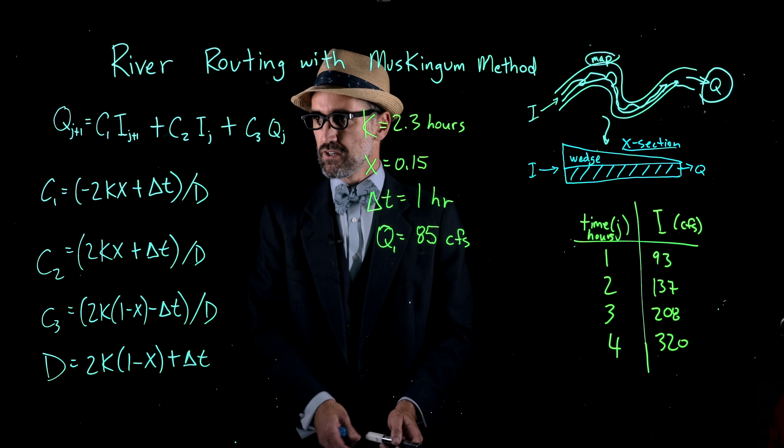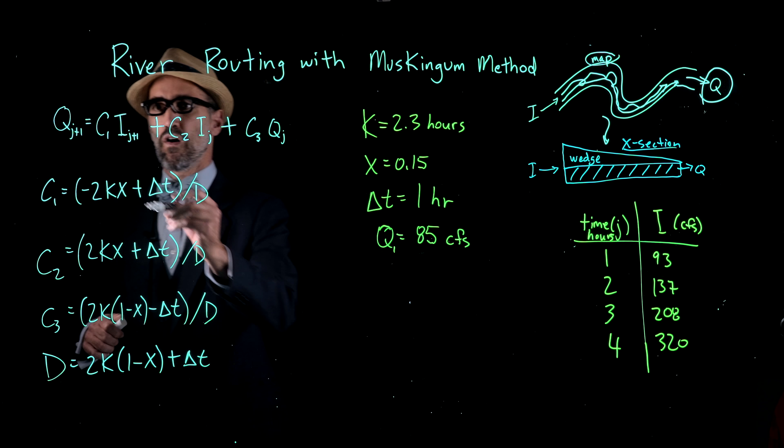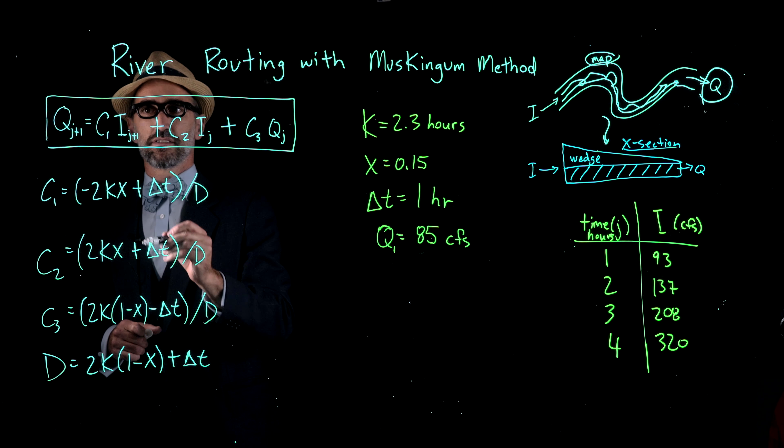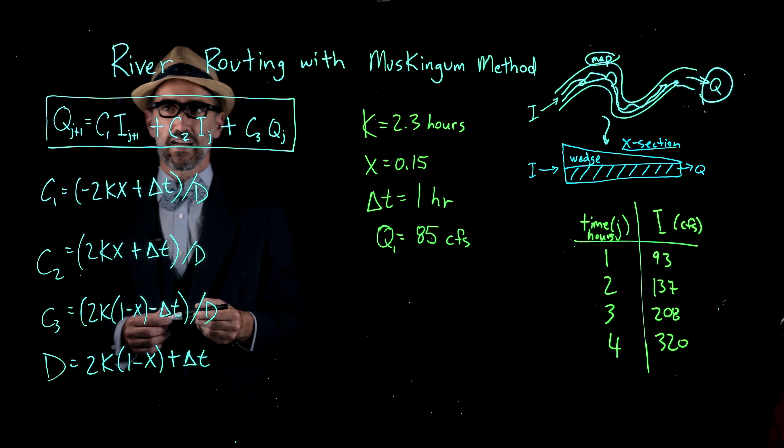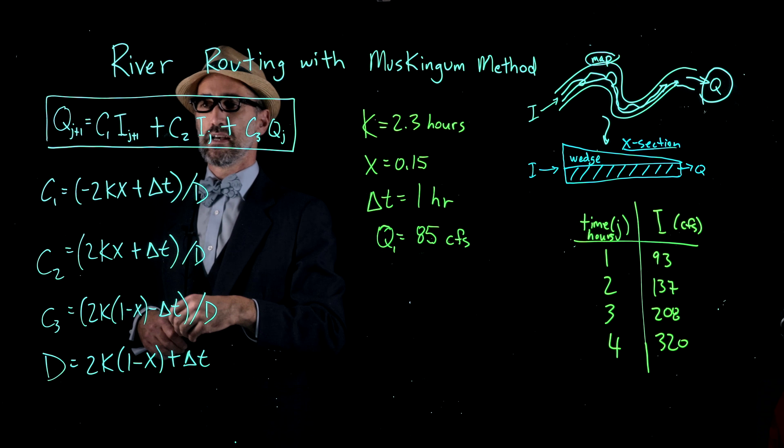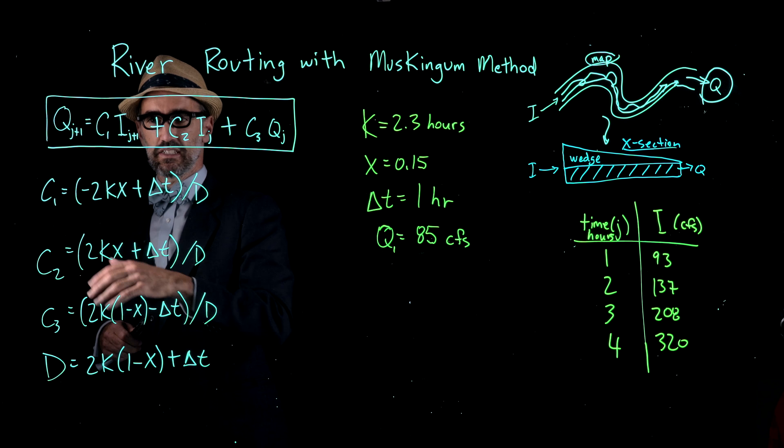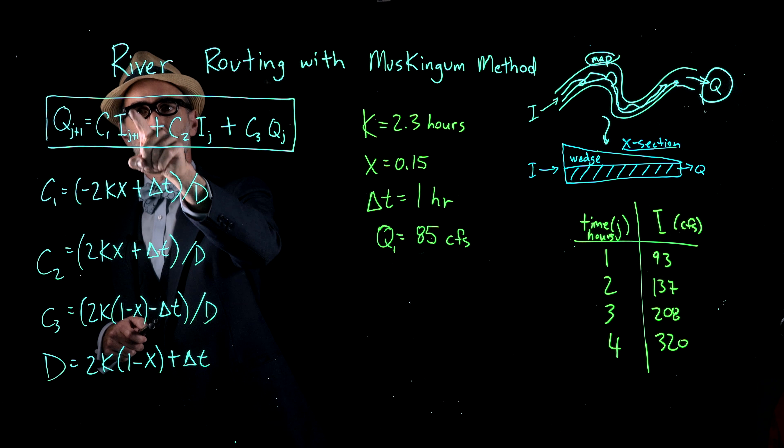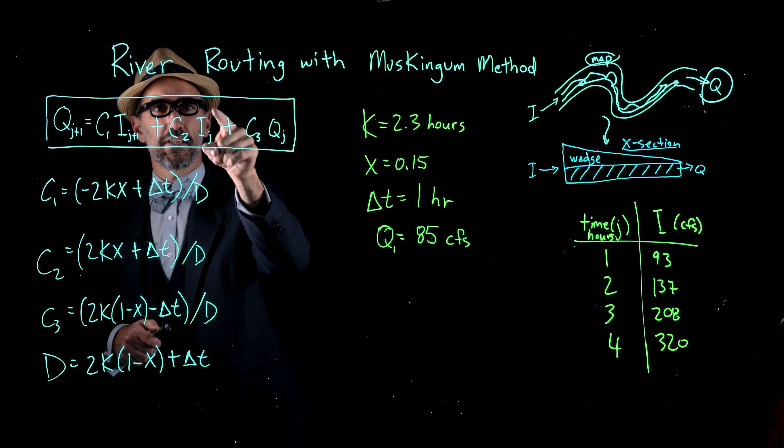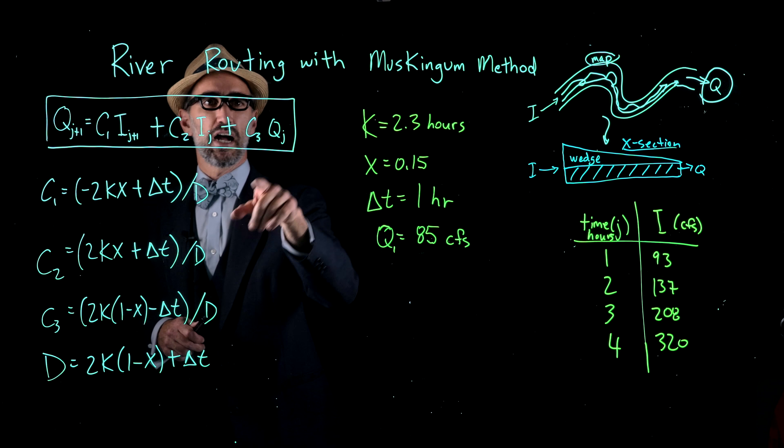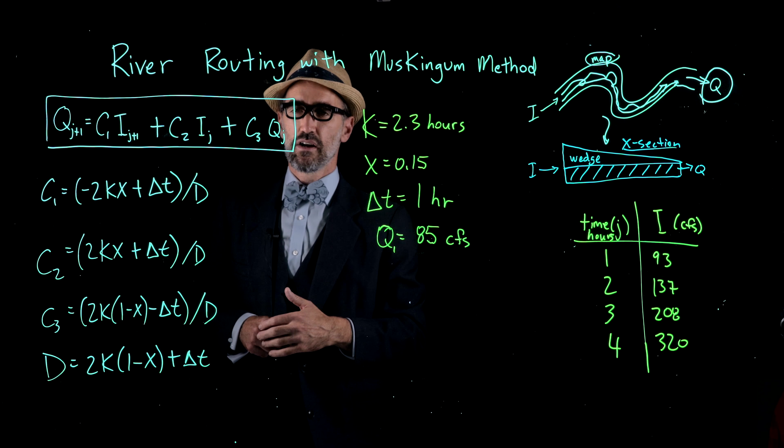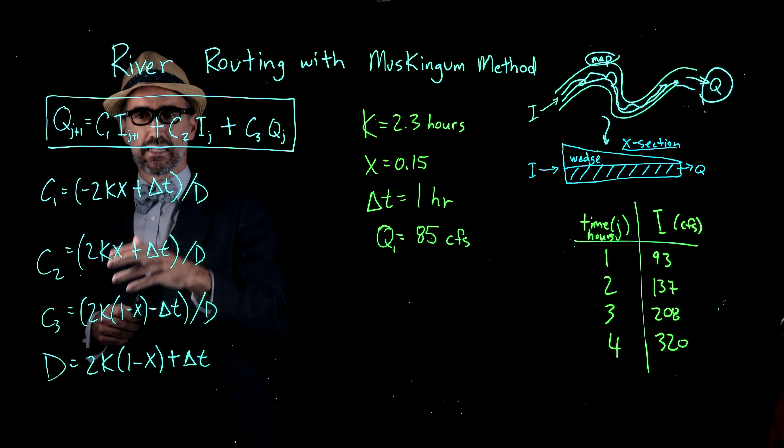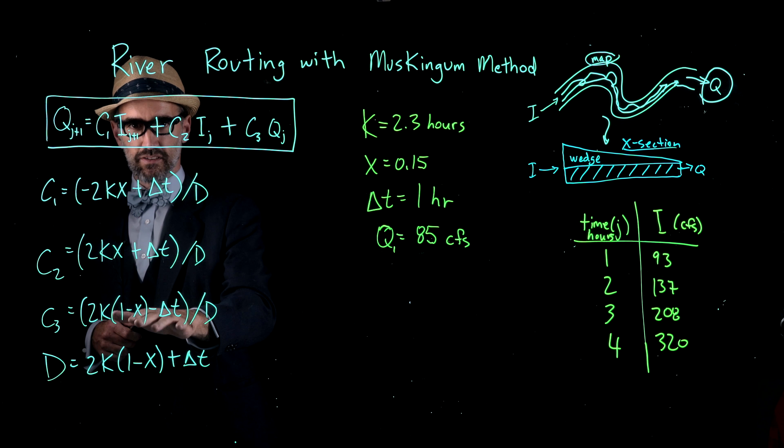In class, we derived this overall equation for river routing using the Muskingum method. What we're solving for is this Q at the next time step, J plus 1. This is a function of these coefficients C1, C2, and C3, as well as the input function at the next time step, the input function at the current time step IJ, and the QJ, the output of the current time step. We first have to calculate each of these coefficients.